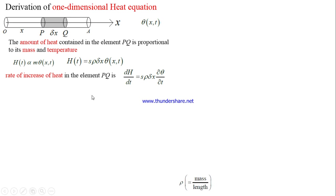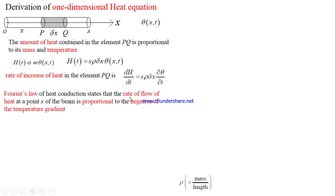Fourier's law of heat conduction states that the rate of flow of heat at a point of the beam is proportional to the negative of the temperature gradient. That is, the rate of flow of heat q is directly proportional to −∂θ/∂x. The negative sign indicates that as x increases, the temperature decreases. This gives q = −k·∂θ/∂x, where k is the thermal conductivity of the material.